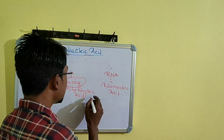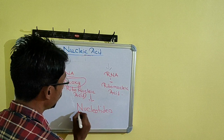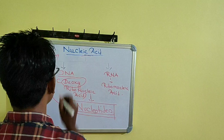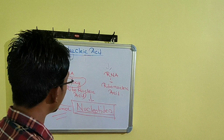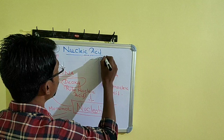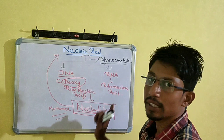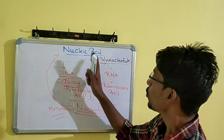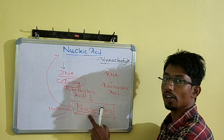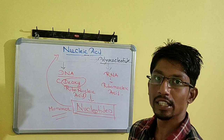Nucleotides are the structural or monomeric unit of nucleic acid. These nucleotides make up nucleic acid, which is why nucleic acid can also be called a polynucleotide — many nucleotides joined together to form nucleic acid. We have two types: DNA and RNA. To get their structure, we have to go through the structure of nucleotides.